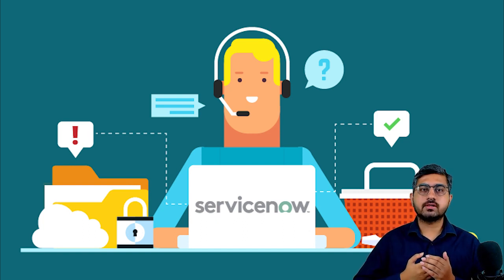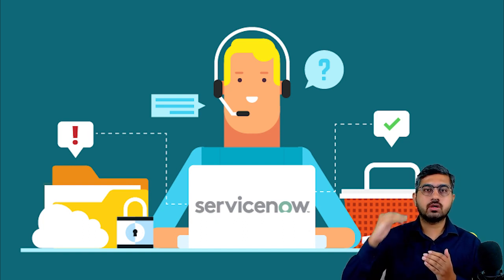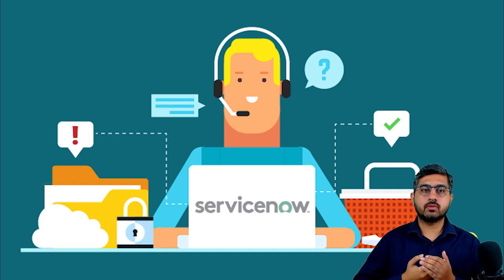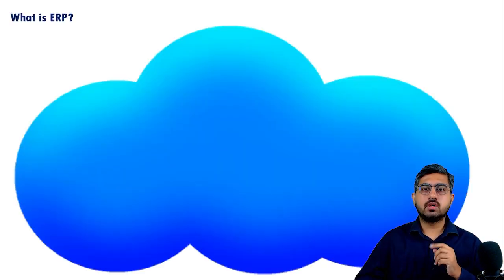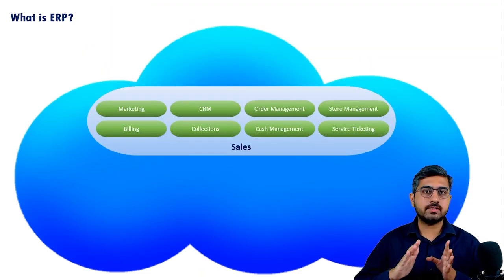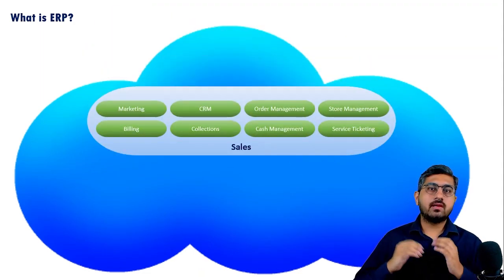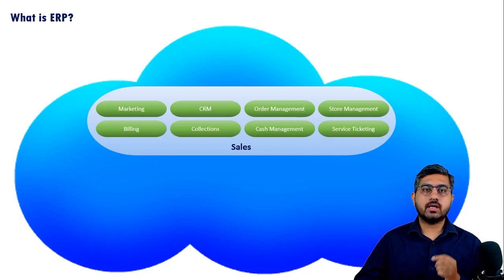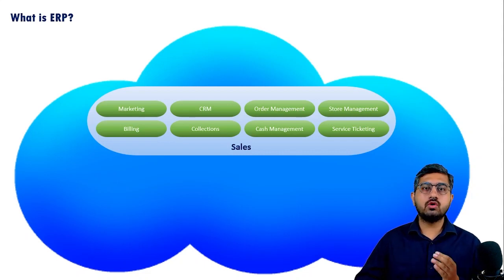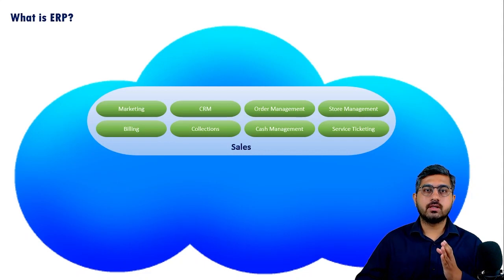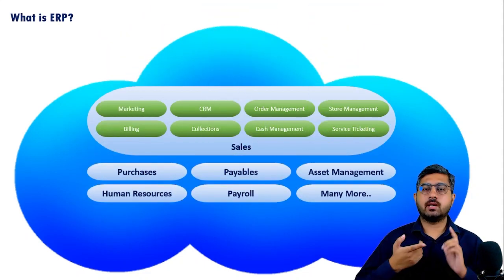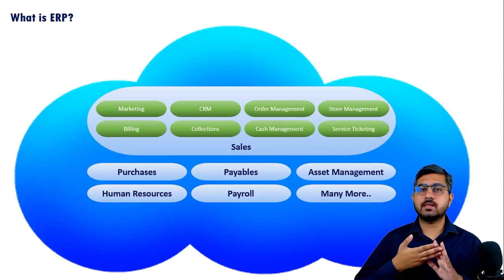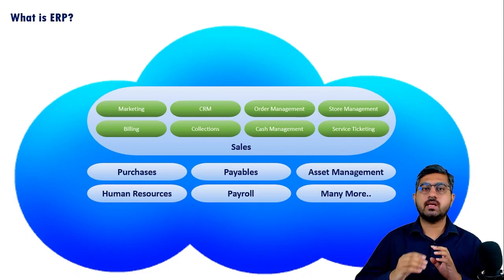Last but not the least, you have completed the sales cycle and now you need to provide after-sales service efficiently so that a one-time customer converts into a repeat customer. Now imagine one simple business process — sales — involves these many steps. Large businesses need sophisticated software for every aspect of their processes, considering the large volume at which they operate. And sales is just one process; they will have many others like purchases, payables, asset management, human resources, payroll, and many more.